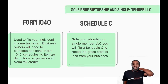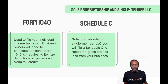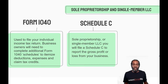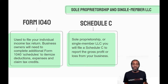Sole proprietorships and single-member LLCs are businesses with one owner — no partner, not a corporation. These solo business owners use Form 1040, the same form everyone uses to file their individual tax return. Business owners need to complete additional schedules depending on their situation, and if you own a small business, that's when you use Schedule C.